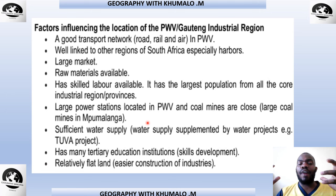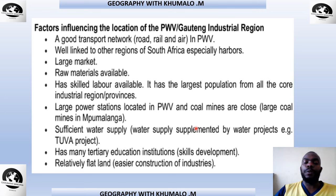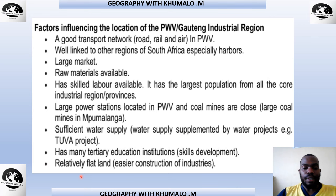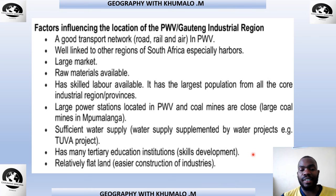Gauteng and Mpumalanga are not far from each other, so we are able to generate electricity more cheaply compared to areas on the outskirts of the country. There is sufficient water supply through the Tugela-Vaal project. Gauteng also has many tertiary education institutions for skills development — UP, TUT, VUT, Medusa, and many others. The flatland also makes it easier to construct industries.